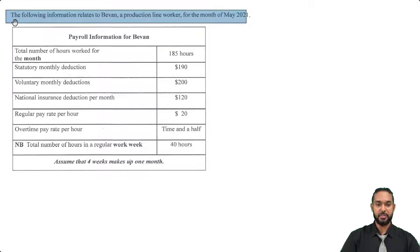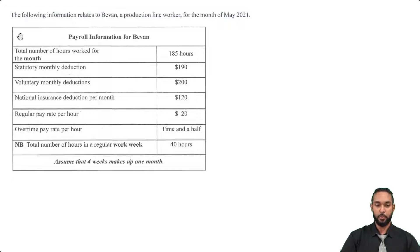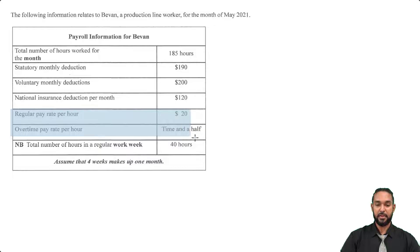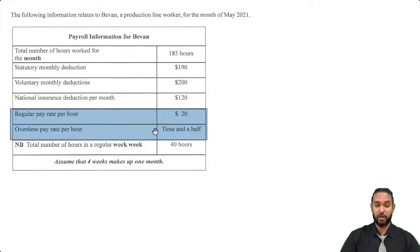Let's start by taking a read of the information. The following information relates to Bevan, a production line worker for the month of May 2021. The table gives us payroll information for Bevan. The first item is the total number of hours worked for the month, which is 185 hours. The next three items are deductions: statutory deduction, voluntary deductions, and national insurance deduction per month. Following that they give us the pay rates — the regular pay rate per hour which is $20, and the overtime pay rate per hour which is time and a half. Half of 20 is 10, so 20 plus 10 is $30.